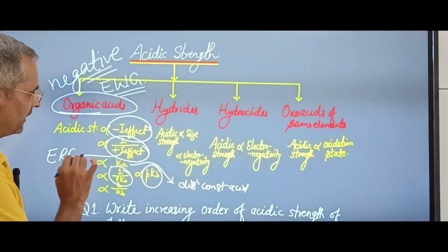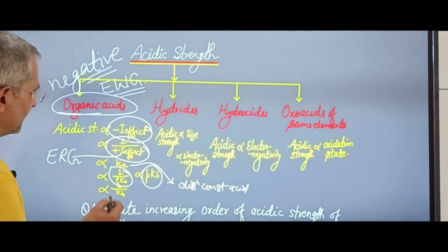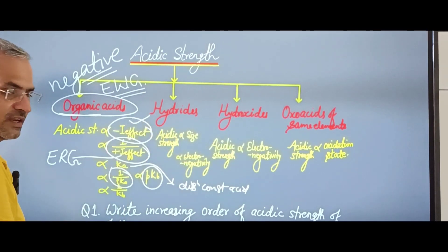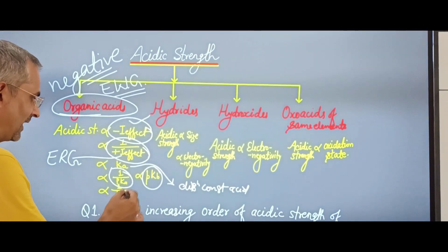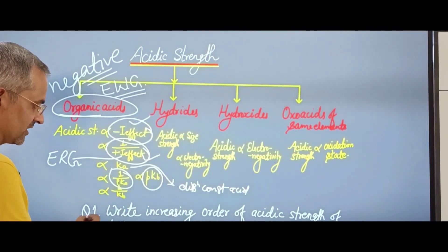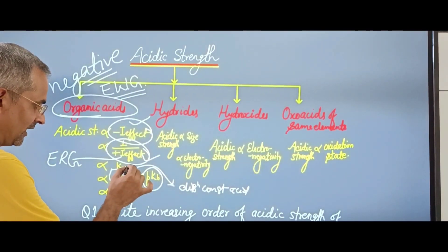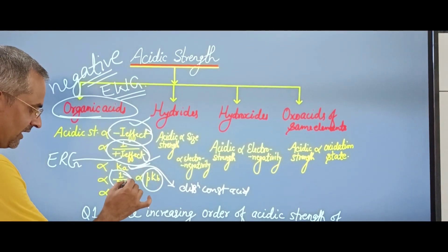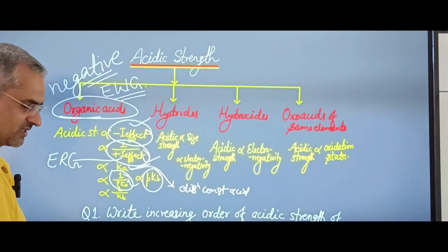So the key points to remember: minus I effect → directly increases acidity; plus I effect → inversely related; Ka directly proportional to acidity; pKa inversely proportional to acidity.